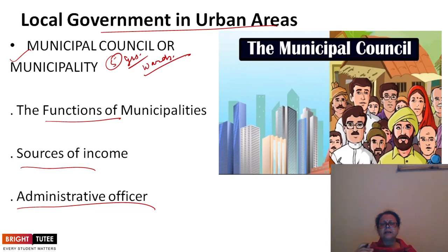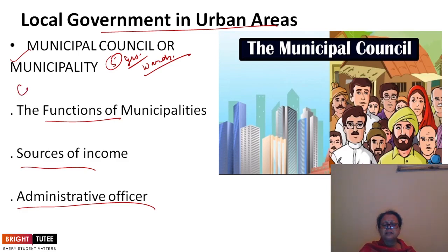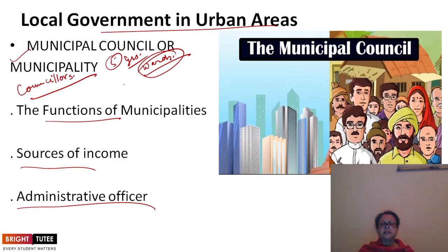Just as we have constituencies for legislative assembly elections, for local body elections we have wards. The city is divided into different sections known as wards, and voters from each ward elect their own representative. These representatives are known as councillors — one councillor is elected from each ward.